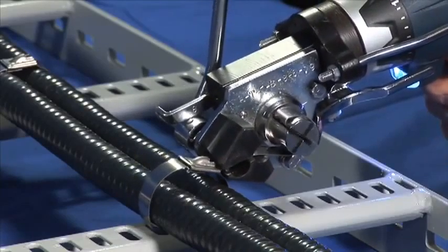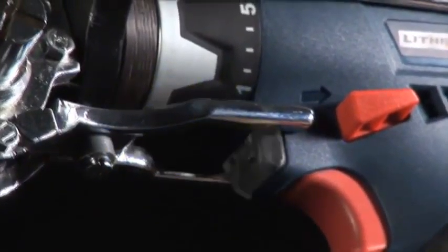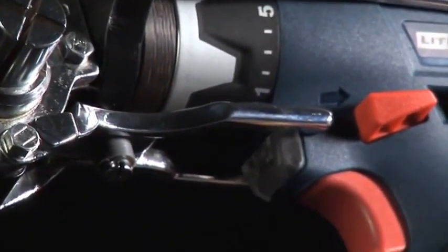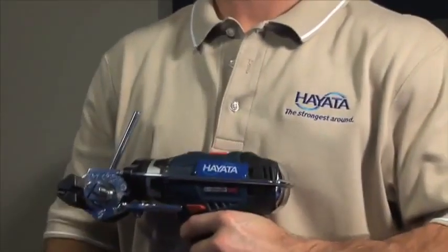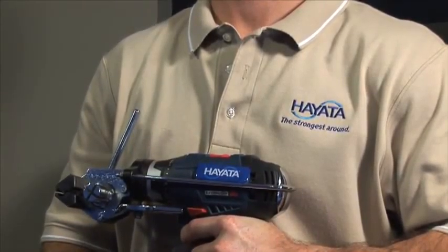Designed to work seamlessly with every cable tie, the BT12000 also features a built-in work light perfect for installations in dark or low light environments. The Hayata BT12000, built for speed.